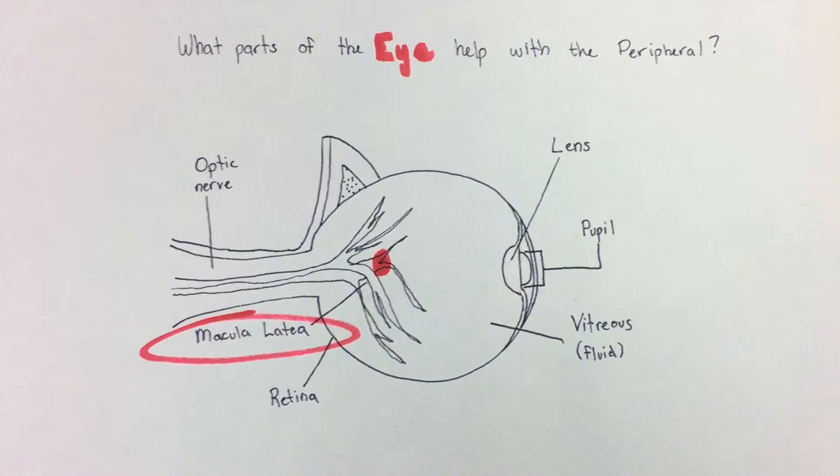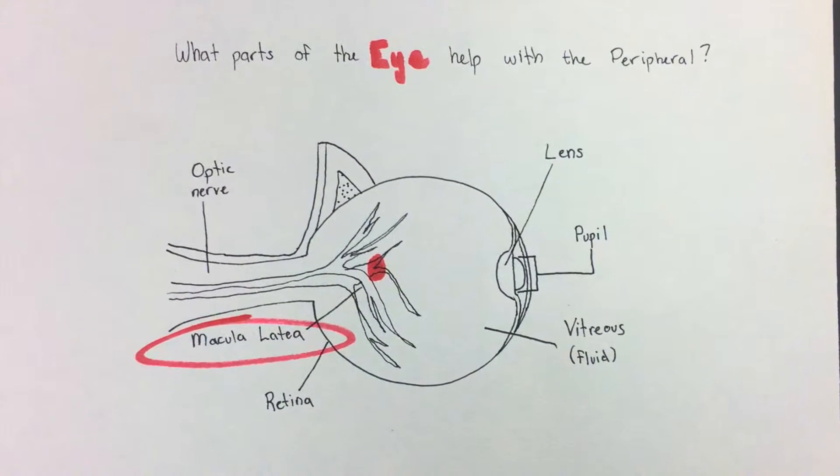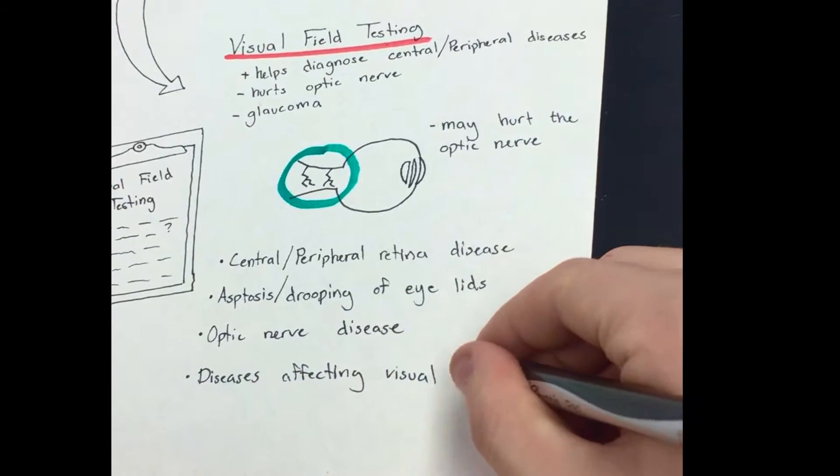To begin with, the field of vision is the entire area that a person or animal is able to see when their eyes are fixed in one position. This includes the central and peripheral vision.